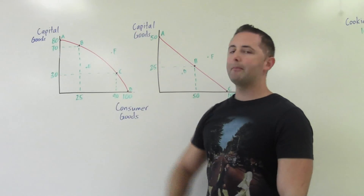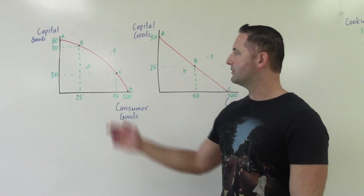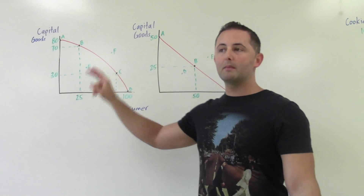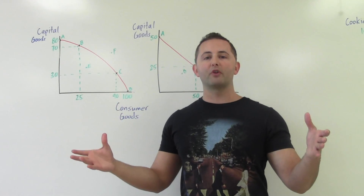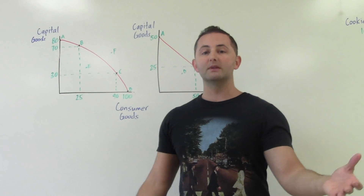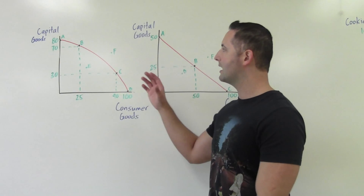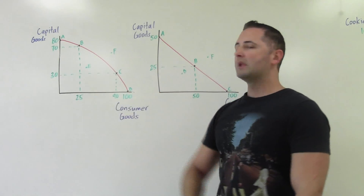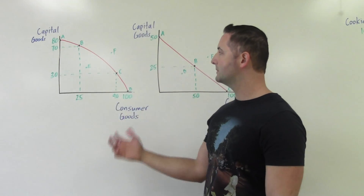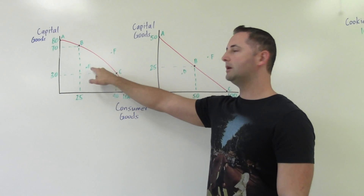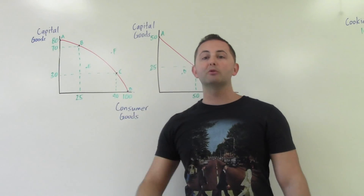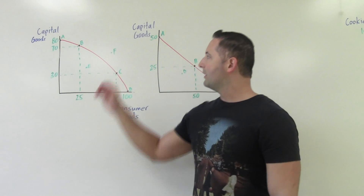Point E, which is inside the curve, represents inefficiency — where they could make more capital or more consumer goods without giving up anything else. For example, in microeconomics, if a pizzeria is operating inside its production possibilities curve, it could be because one of their ovens is broken and they can't produce as many pizzas or lasagnas. For an entire economy, it could be because we're in a recession — fewer people producing, fewer jobs, more unemployment.